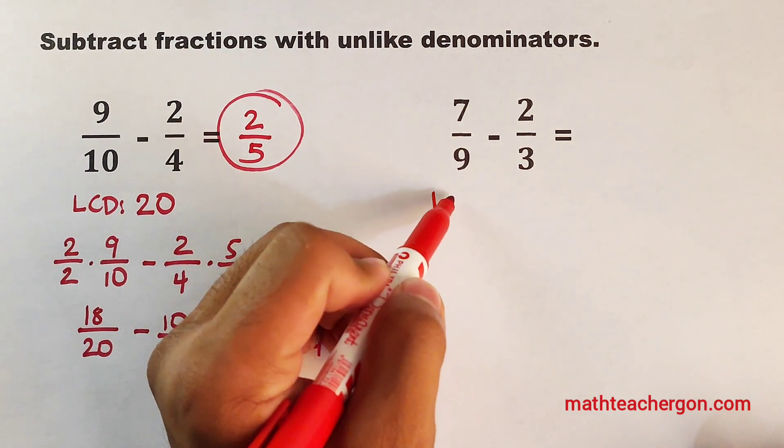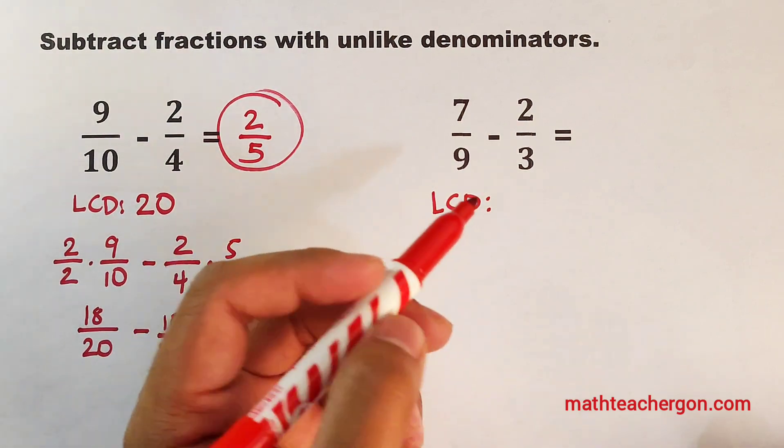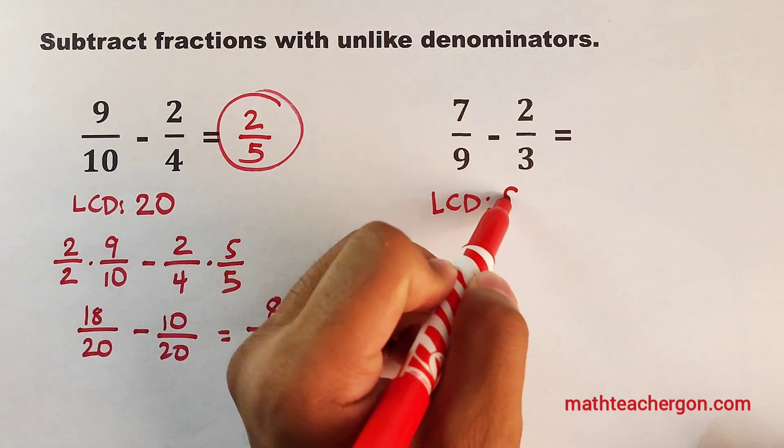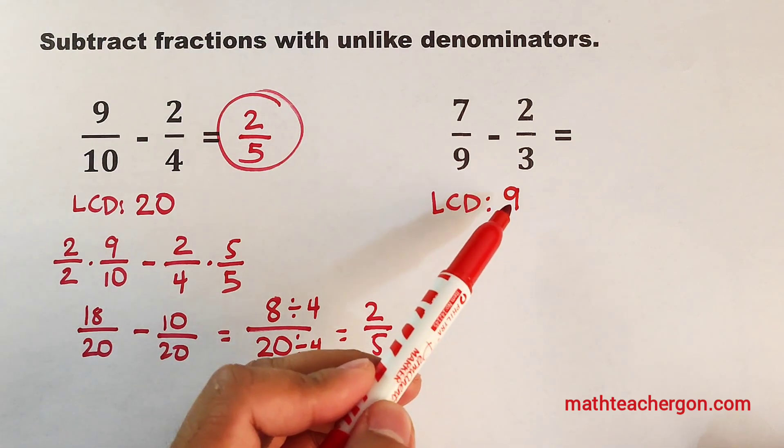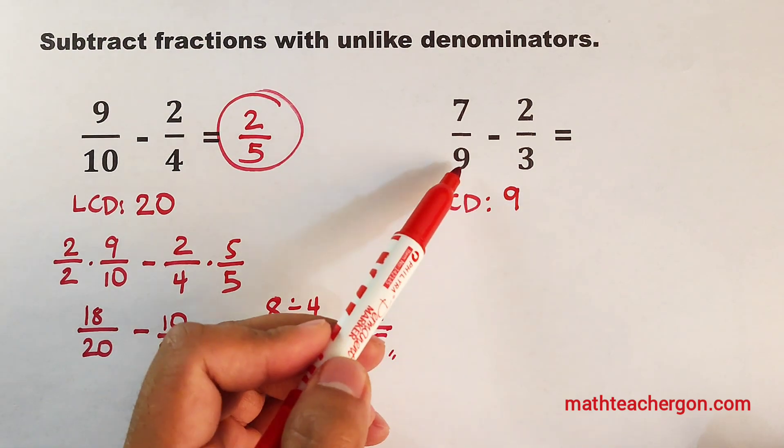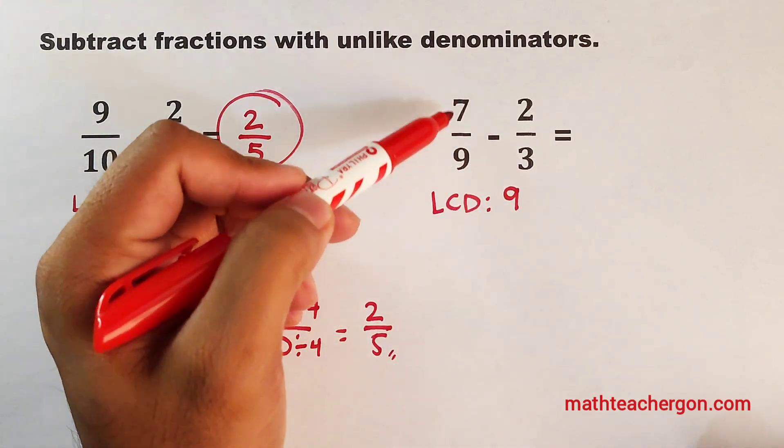So, let's think about it. What is the LCD between 9 and 3? Okay, that's correct. The LCD is 9. Now, we will think of the numbers that we need to multiply by 9, add to 9 and 3 to make it 9. In this case, for this fraction,